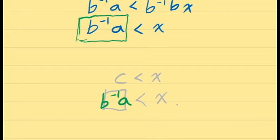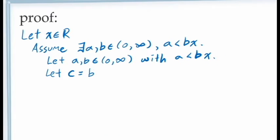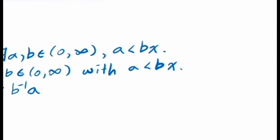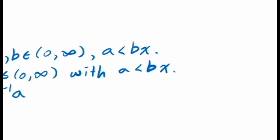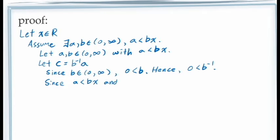Let's return to our proof. Letting c be the specific value a times b inverse, we should be able to quickly demonstrate that c is less than x. We can say: since we have the inequality a is less than b times x, and since b is greater than 0, we also know that b inverse is greater than 0. By axiom 0.4, this allows us to multiply b inverse on both sides of our inequality, giving us ab⁻¹ on the left-hand side and simply x on the right-hand side.